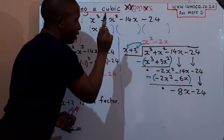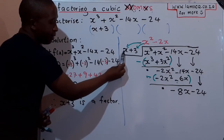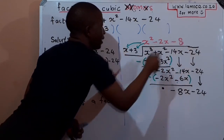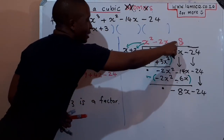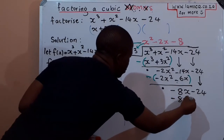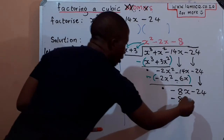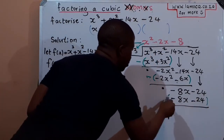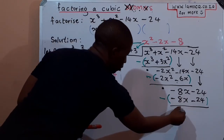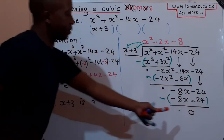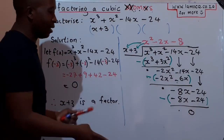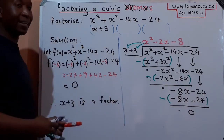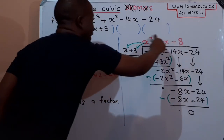Third cycle — divide: −8x ÷ x = −8, placed at the top. Multiply: −8 × x = −8x, and −8 × 3 = −24. Subtract: −8x − (−8x) = 0, and −24 − (−24) = 0. The remainder is zero, which confirms we divided correctly and that (x + 3) is indeed a factor of this cubic.